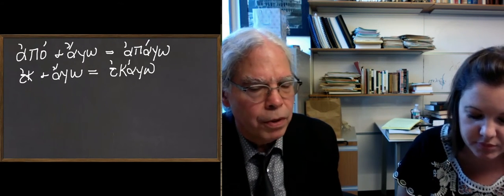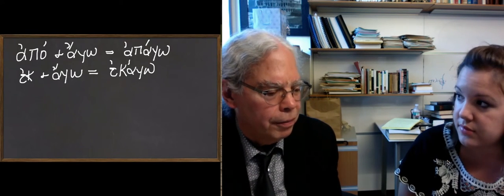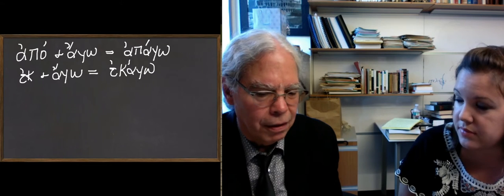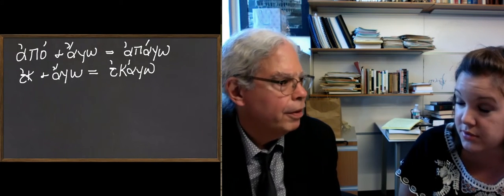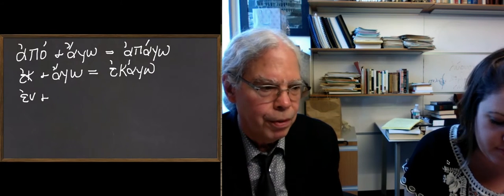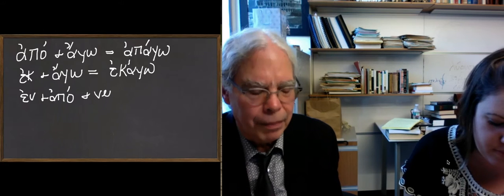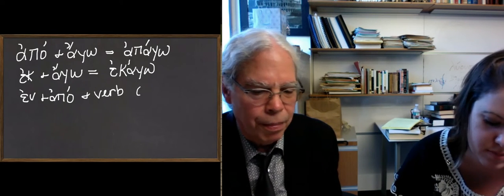There are a few places where you have two preverbs. Like, you can say, en plus apo plus a verb. Okay? We haven't had any of those, but we'll see examples of that later on. And they just apply both forms.